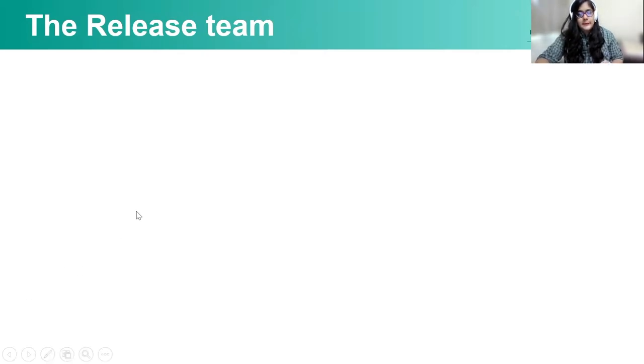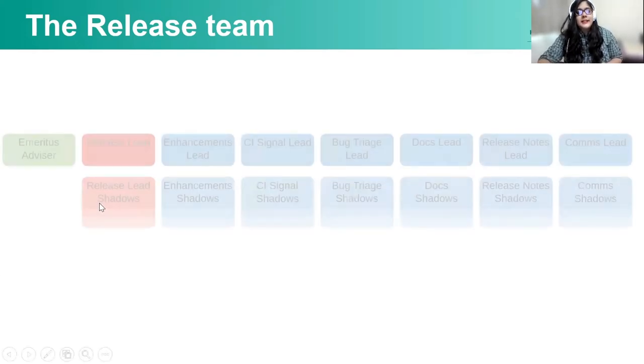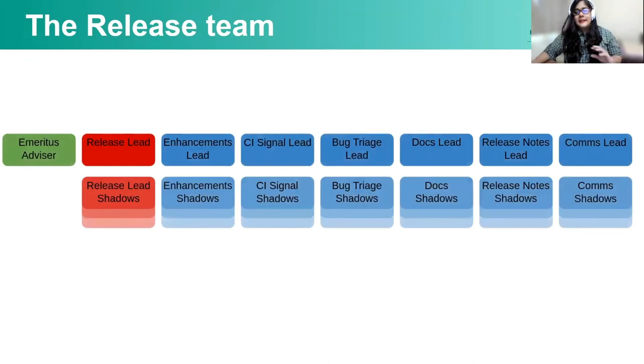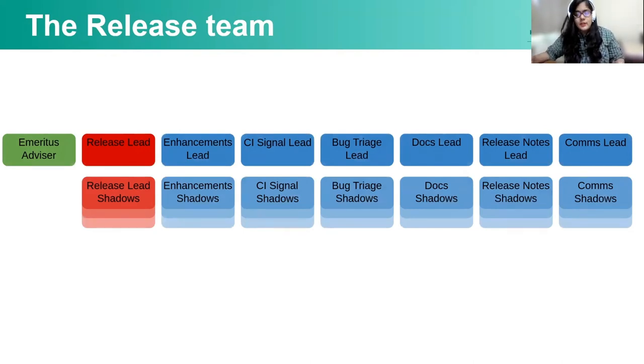I've spoken at length about the release team, so you must want to see a pictorial depiction of how the release team looks. The release team as a whole basically looks like this. As you can see, there are a lot of verticals in the release team: there's an enhancements vertical, a CI signal vertical, a bug triage vertical, a docs vertical, release notes, and a comms vertical.